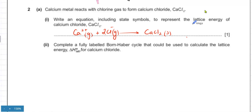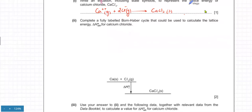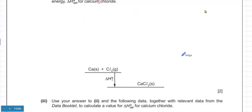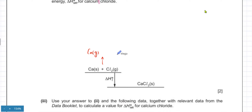Ions getting together to form an ionic lattice — that's lattice energy. You have to complete a fully labelled Born-Haber cycle that can be used to calculate the lattice energy of calcium chloride. You start off with the enthalpy of formation, which is already given, and you have to reach the other end. There are three steps: first, you atomize the atoms, so calcium solid becomes calcium gas — that is the enthalpy change of atomization of calcium. Cl₂ remains as it is.